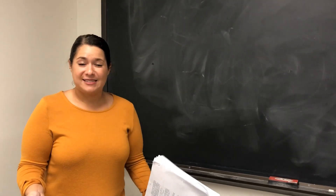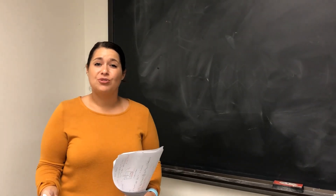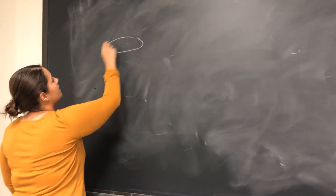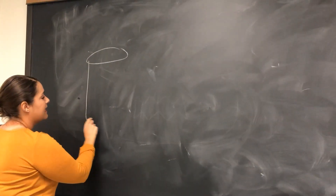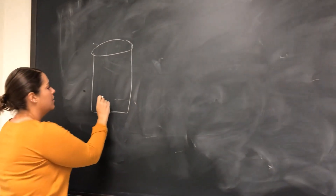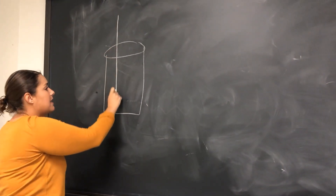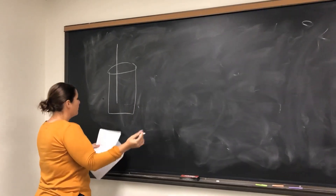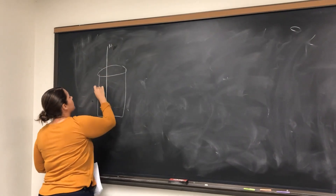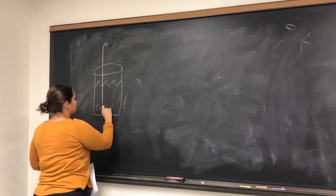Alright, so part one of this experiment, you're going to be having three different solutions — if I draw them up, here's an example. You're going to have a test tube, and in that test tube you're going to have a wire that's going to be in metal. For example, we have a nickel wire, and in solution it's going to be copper solution.